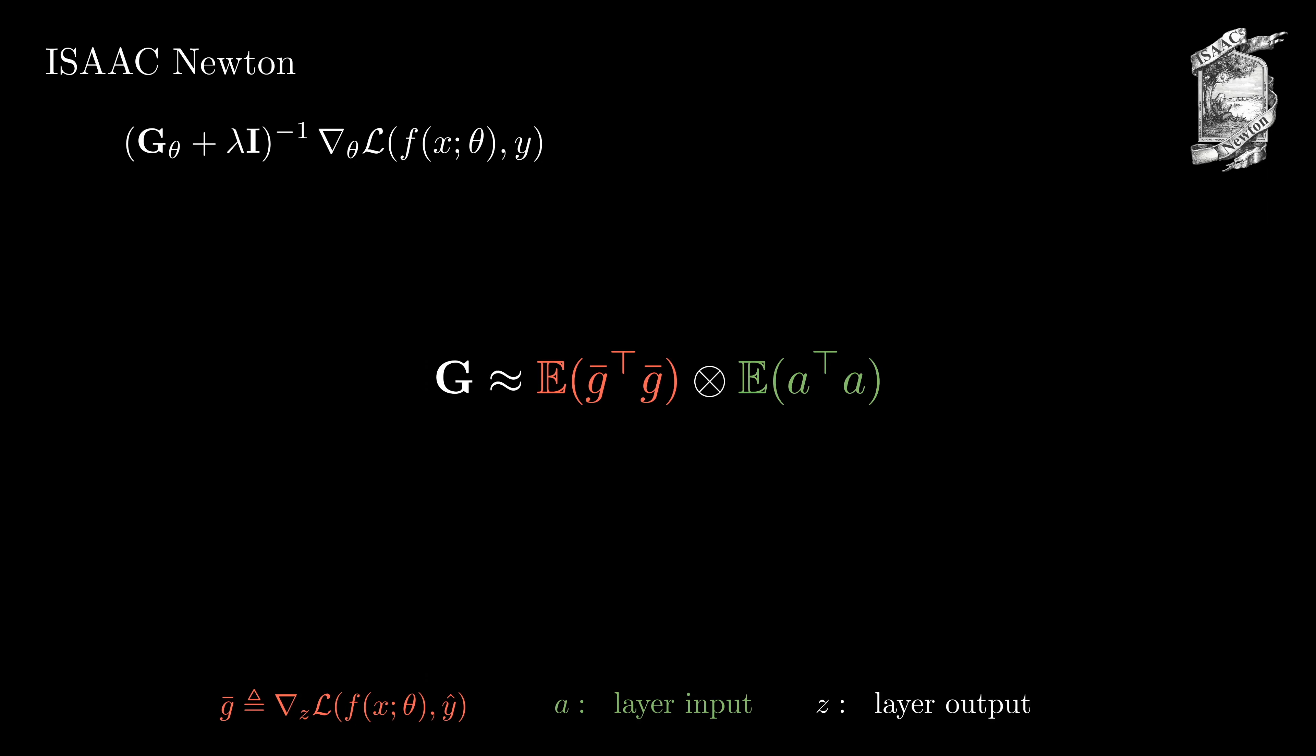Note how the loss for this gradient is not between the prediction f of x theta and the ground truth y, but instead it is between the prediction and a sample from the prediction, that is y hat. It is important to note that we cannot simply replace y hat with y and use our gradients at this point. Further, it is only a rank-one approximation and in practice we might need to use an even higher rank approximation requiring even more backward passes.